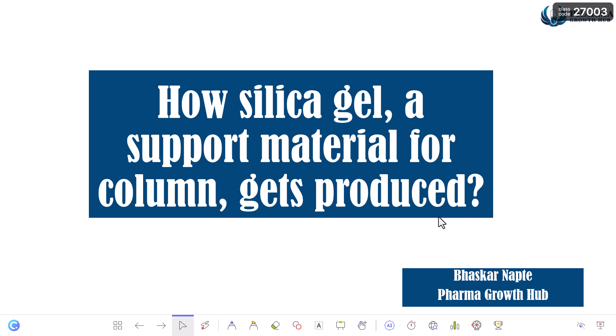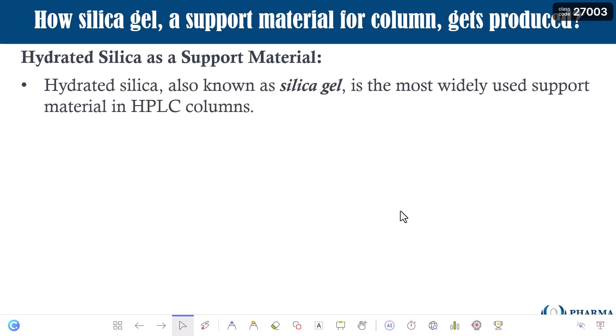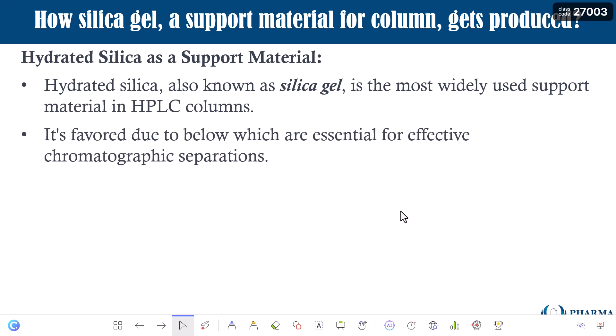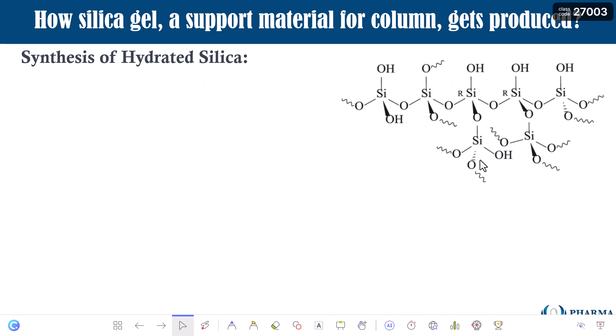Let us now begin with why hydrated silica or silica gel is used as a support material. It is favored because of its high mechanical strength, chemical inertness, and large surface area. This is the structure of a silica gel, and how this silica gel gets manufactured is the point of discussion today.